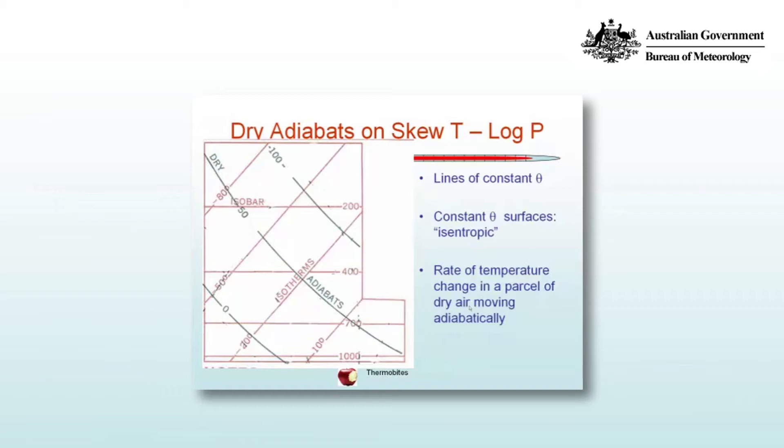This screen shows the Skew T-Log P aerological diagram. The log pressure lines, or isobars, run parallel, isotherms are skewed at 45 degrees, and the green lines represent constant potential temperature. Because δQ = 0, δQ/T = 0, meaning dry adiabatic processes are also isentropic. We can refer to surfaces of constant potential temperature as isentropes.